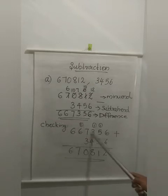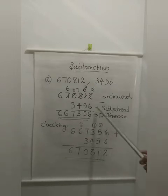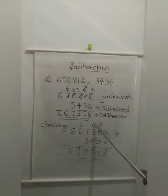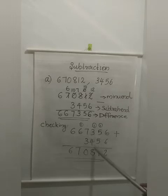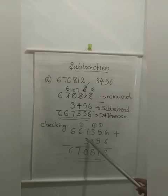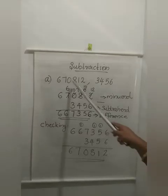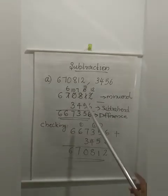So we will check: 6,67,356 plus 3,456. Adding 6 plus 6 is 12 — write 2, 1 carry over. 5 plus 5 is 10, plus 1 is 11 — write 1, 1 carry over. Then 4 plus 3 is 7, plus 1 is 8 — no carry over. 7 plus 3 is 10 — write 0, 1 carry over. 6 plus 1 is 7. So we got 6,70,812. That is our minuend.